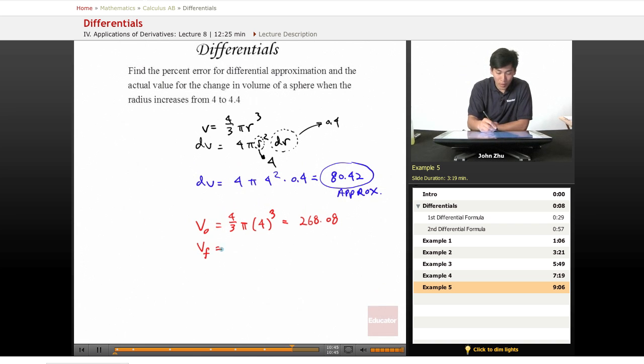The final volume is 4/3 π (4.4)³, which equals 356.82. So V_f minus V_0 gives us an actual change of 88.74.